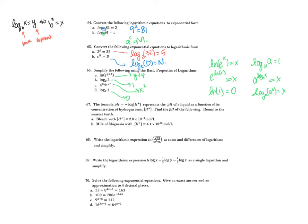This formula represents the pH of a liquid as a function of its concentration of hydrogen ions. Find the pH of bleach with H+ equal to 2 times 10 to the negative 13. The pH equals the negative log of that number: negative log(2) minus log base 10 of 10^(-13). That last term is just negative 13, so we have negative log(2) plus 13. Plugging into the calculator, I get 12.698.